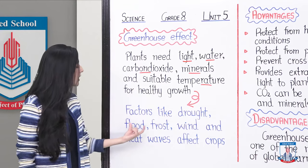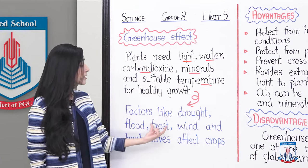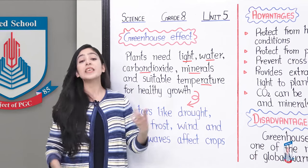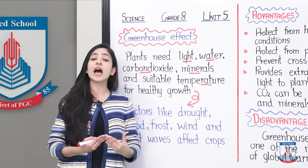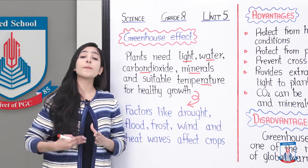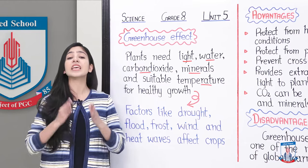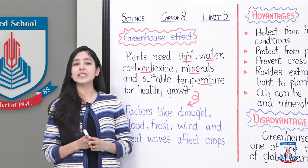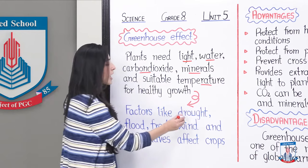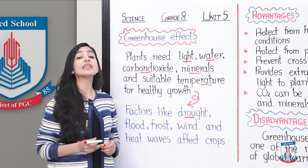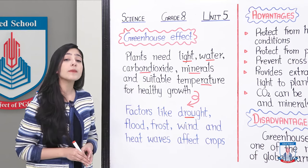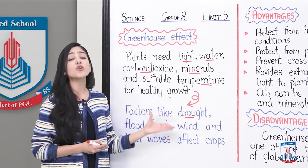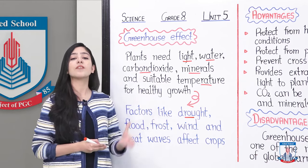Factors like drought, flood, frost, wind, and heat waves affect crops — or we can say harsh weather conditions affect our plants. Drought is a lack of water. If there is a lack of water in a place, like in a desert, plants don't get water and cannot survive.